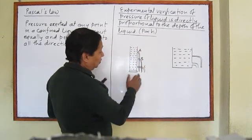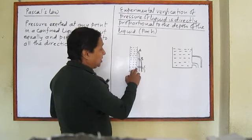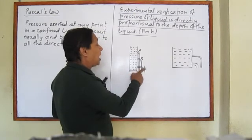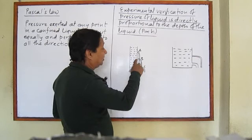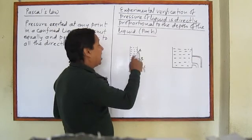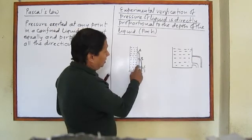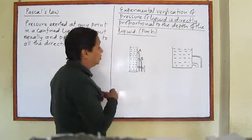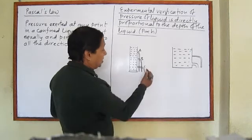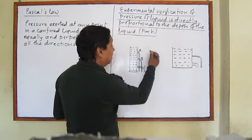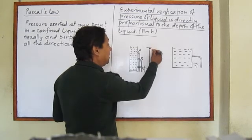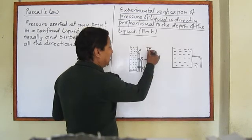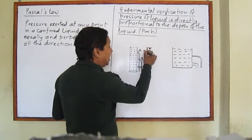Then what is found? The pressure of water coming out of hole C is greater than that of B, and pressure at B is greater than A. It can be seen very clearly. That's why we can conclude that hole C lies at greater depth than A and B. B lies at greater depth than A, and A is at least depth.